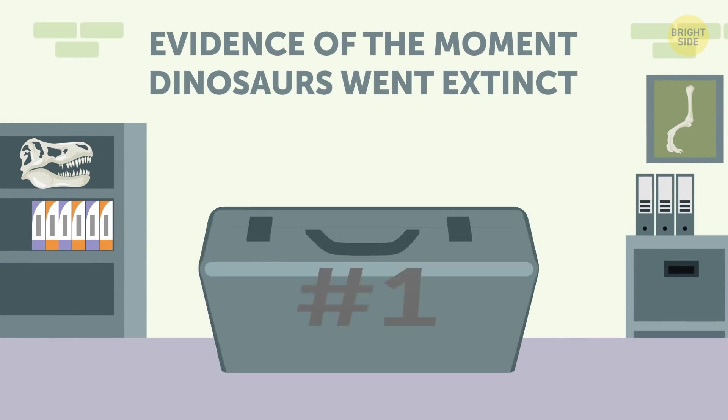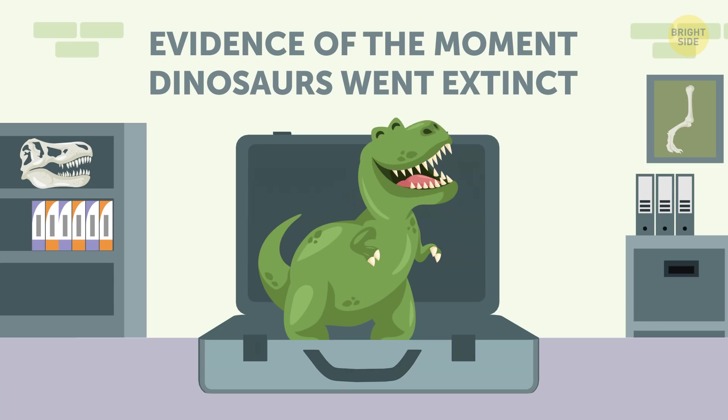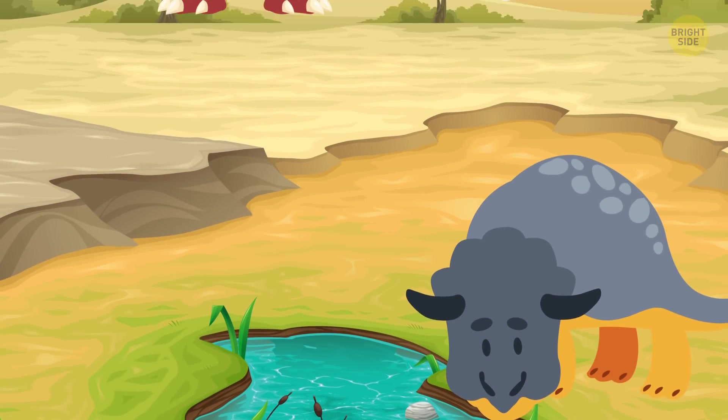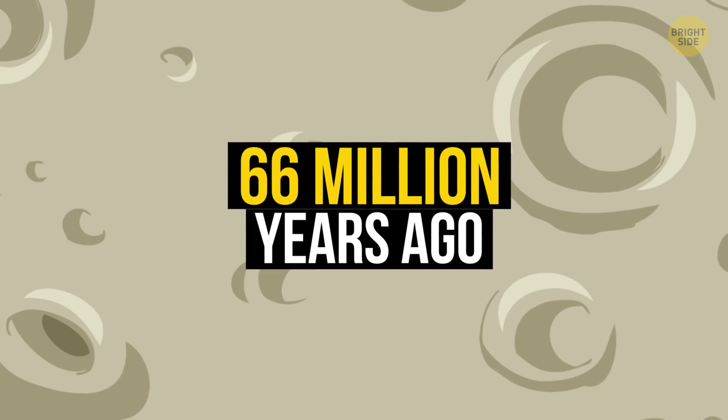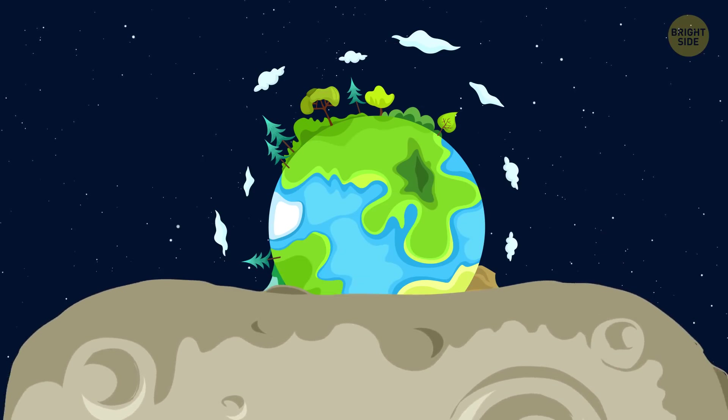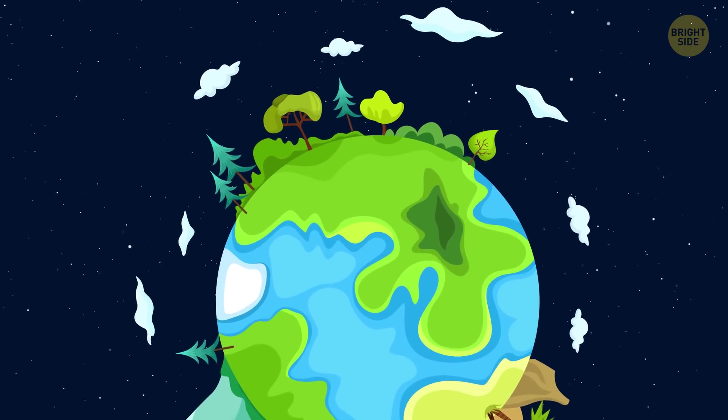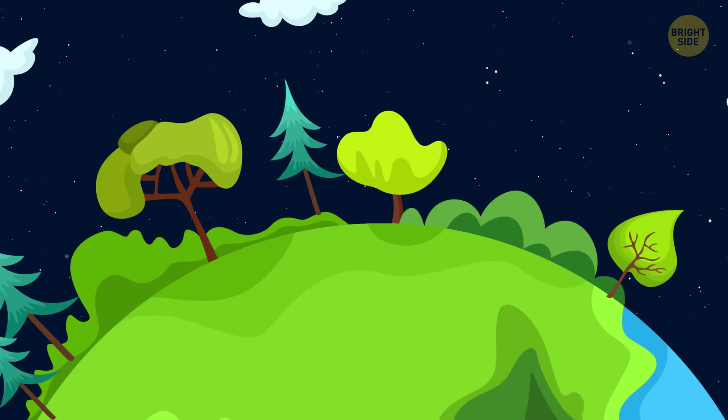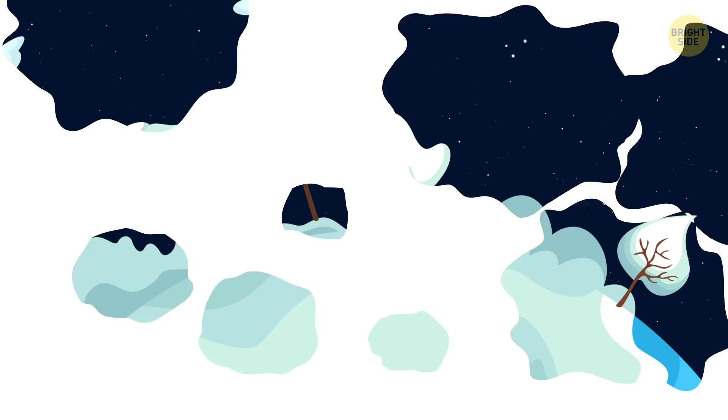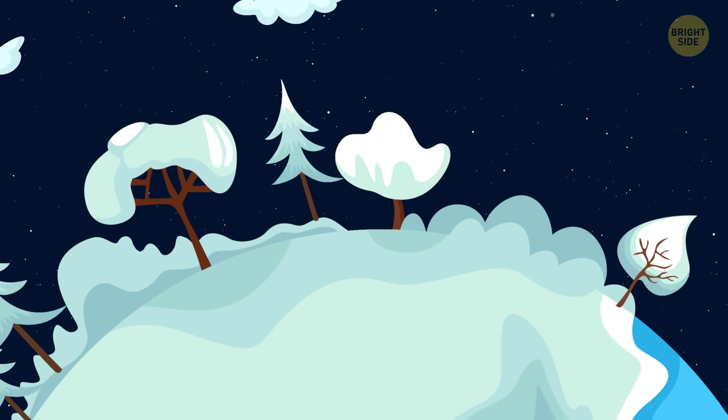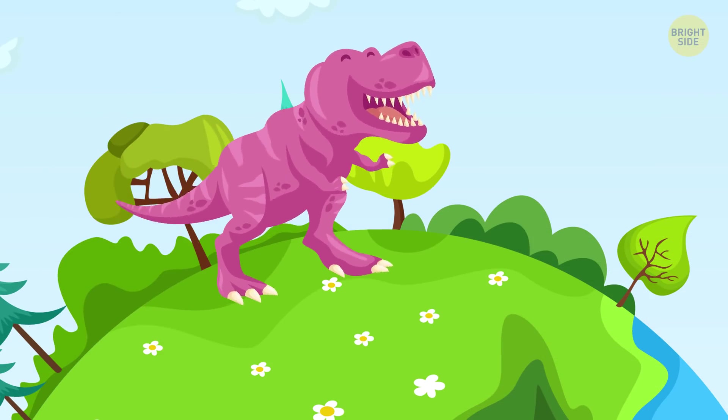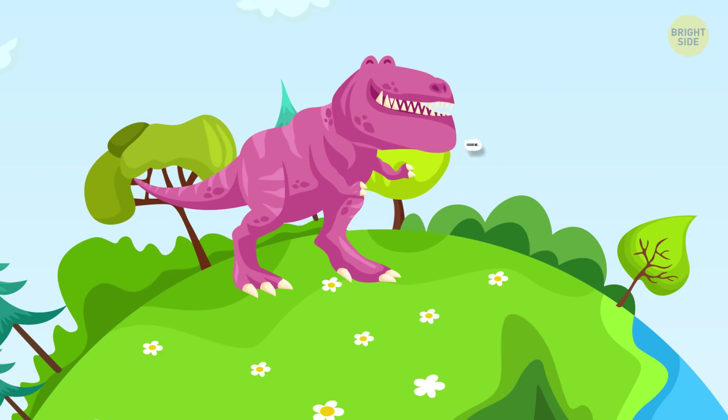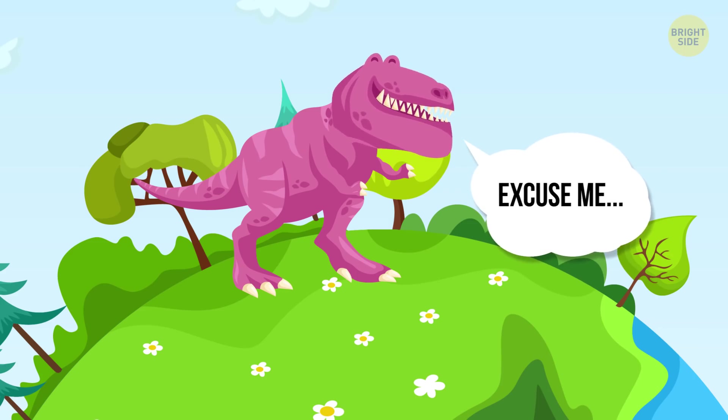Number 1. Evidence of the moment dinosaurs went extinct. We all kinda know that dinosaurs met their total endgame when a giant meteorite struck the Earth 66 million years ago. But this information was only a description of the most probable chain of events. There are tons of other theories, from climate change to a mass dino allergy to flowers. Well, can you imagine a dinosaur sneezing? It seems like debates on this subject are finally getting closer to the end.